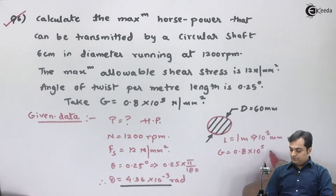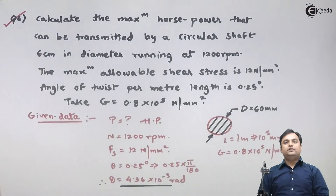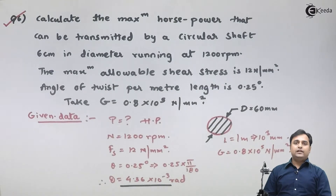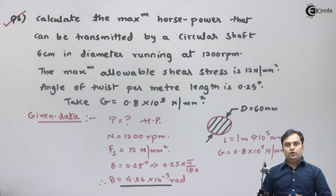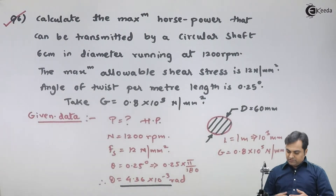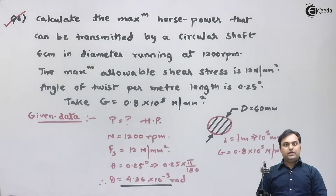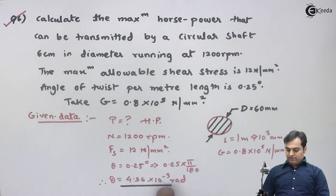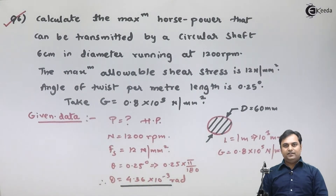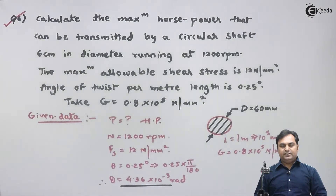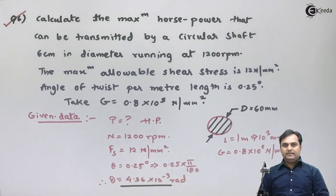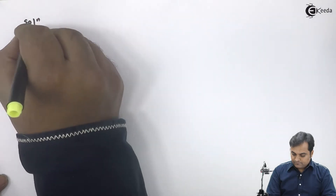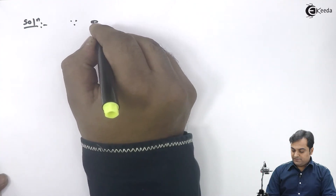Now we have to calculate the value of power. In previous problems, power was given and we calculated shaft dimensions. In this question, diameter is given and we need to find power. Since both shear stress and modulus of rigidity G are given, we will get two values of torque: one from strength criteria and one from rigidity criteria. We will select the least torque value and use it to calculate power.